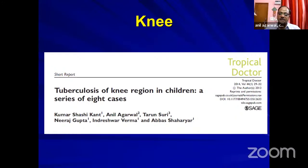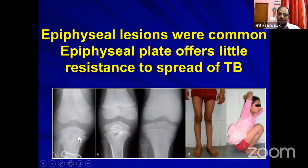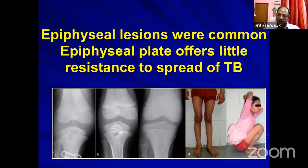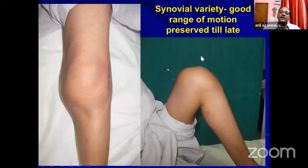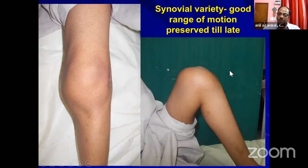Knee tuberculosis in children has slightly different presentations. You find an hourglass-type appearance. The epiphyseal plate, which is supposed to offer resistance to spread of bacteria, doesn't hold true for tuberculosis — epiphyseal reagents are fairly common. But characteristically, the joint space is not reduced and is maintained following treatment. With the synovial variety as well, the knee range of motion is fairly preserved until late.